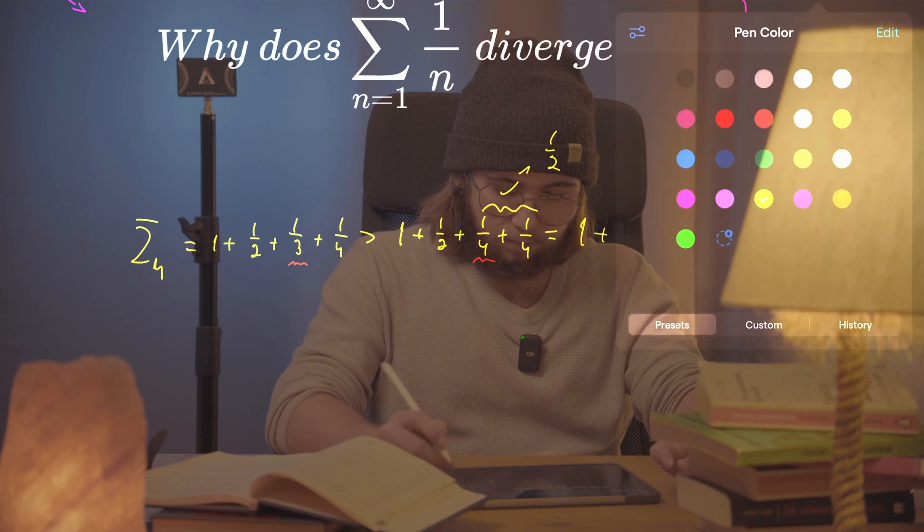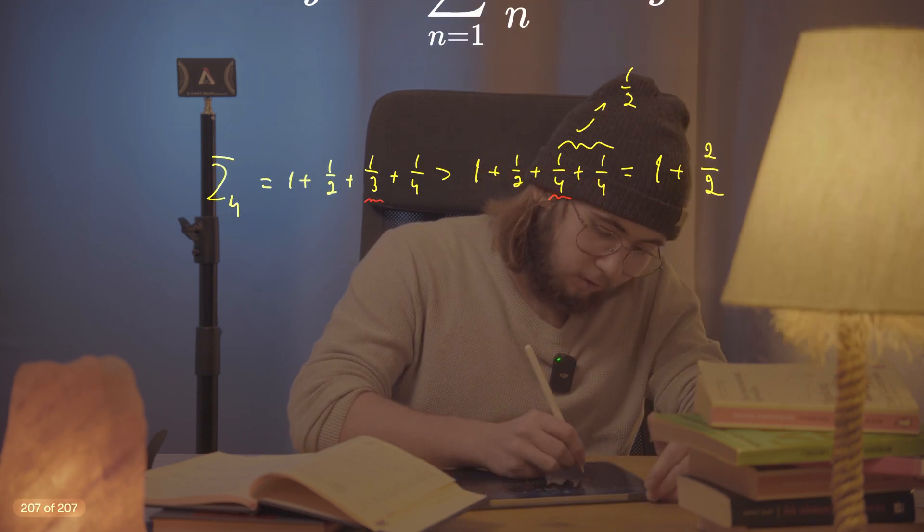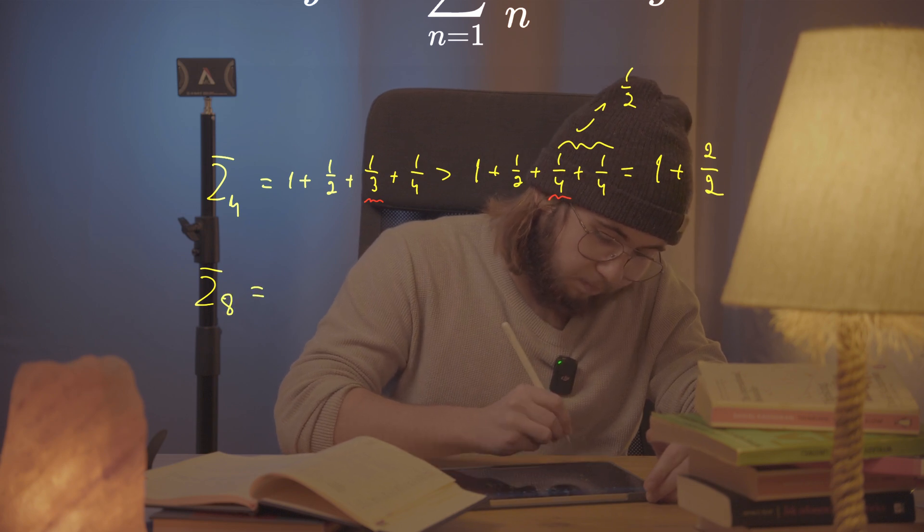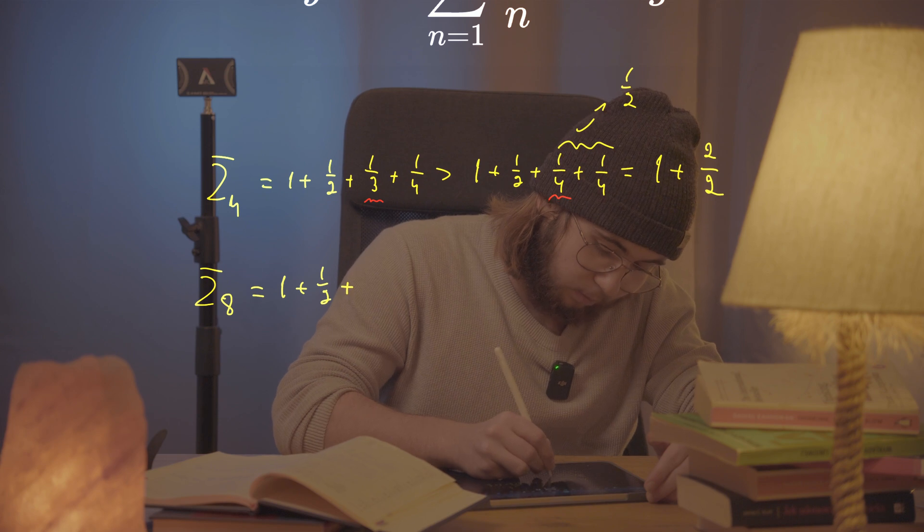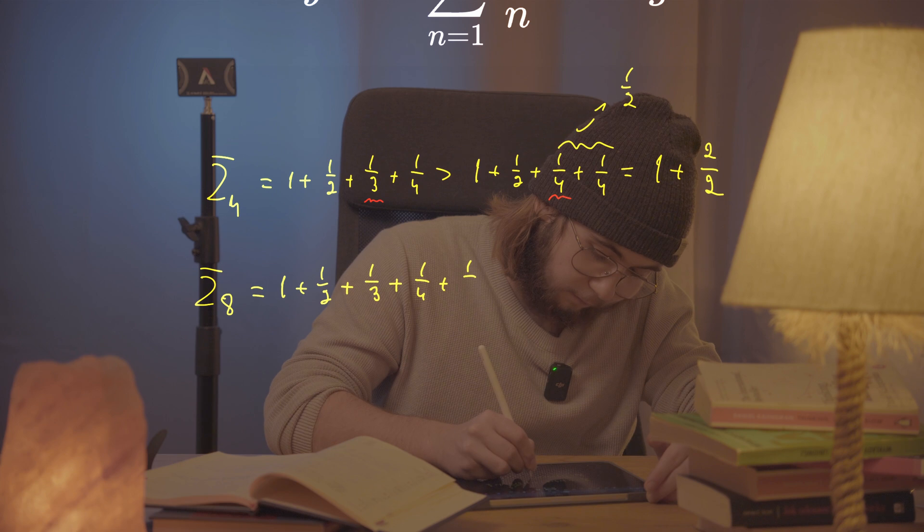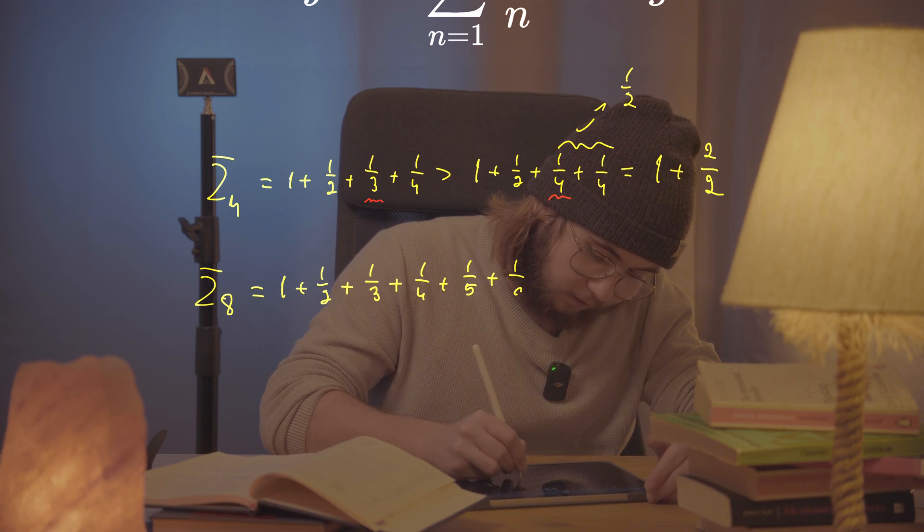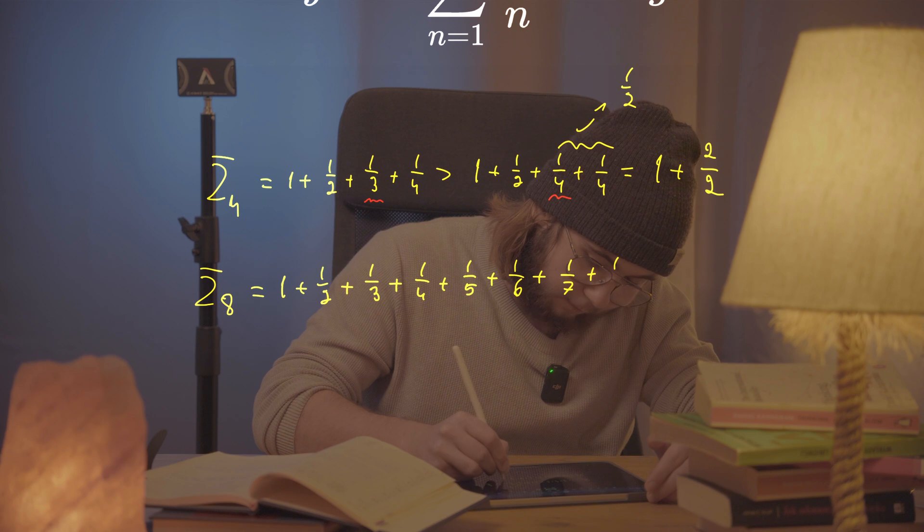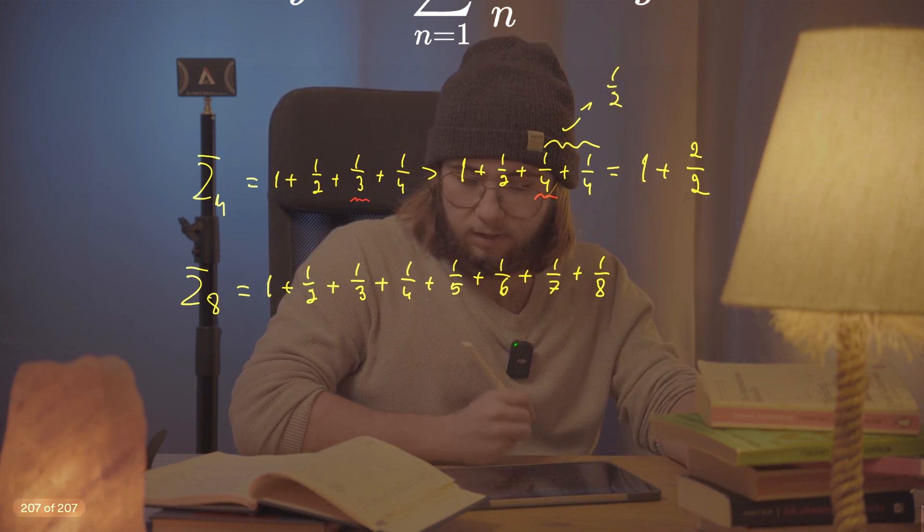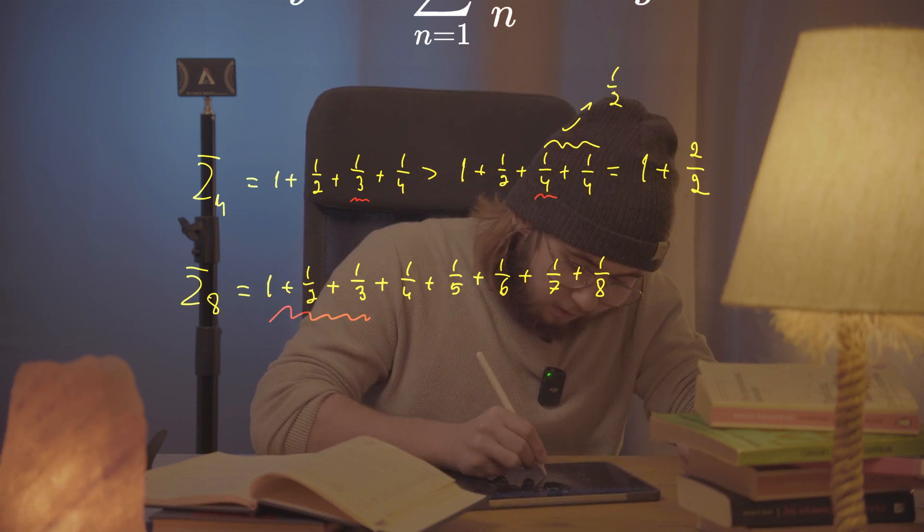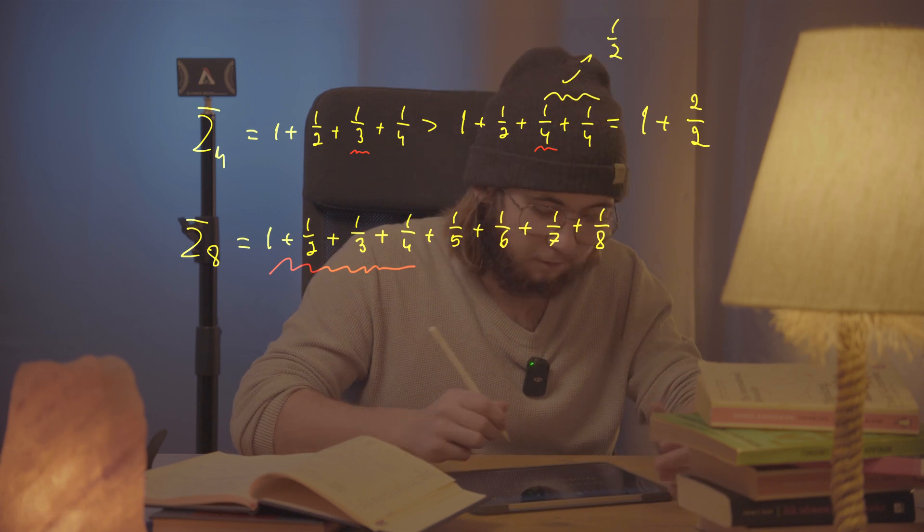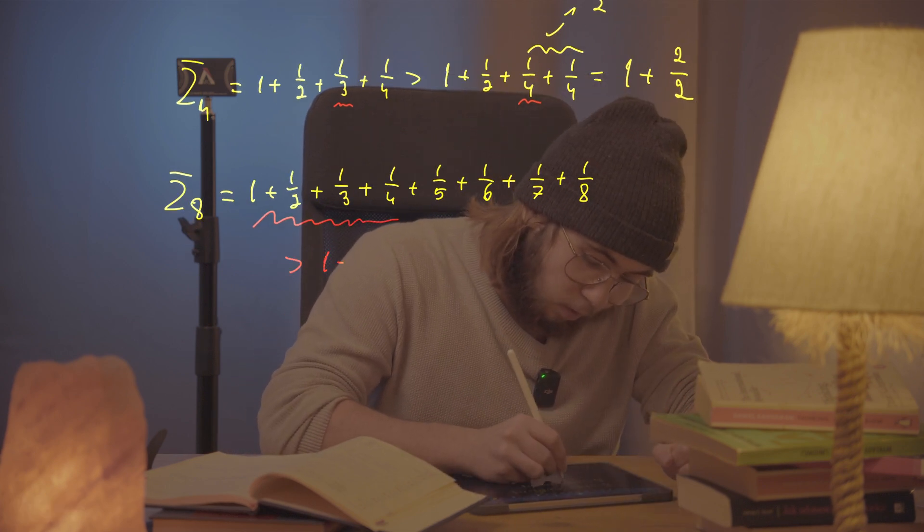That's pretty lovely. And now I would like to take the partial sum of the first eight terms. So there's gonna be a lot of writing: 1 plus a half plus a third plus a quarter, a fifth, a sixth, a seventh, and an eighth. Lovely. And now, well, what can I do here? I've already said that the partial sum up to the fourth term is going to be greater than 1 plus 2 halves.